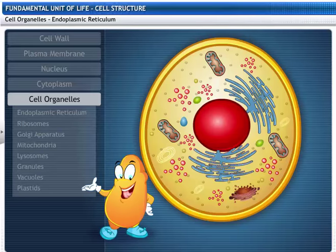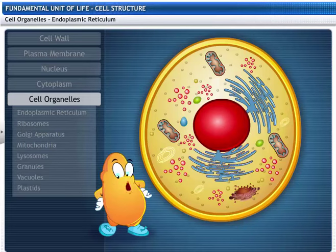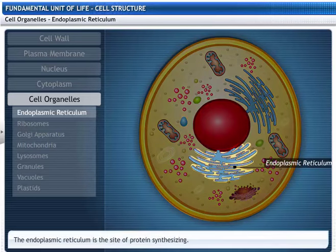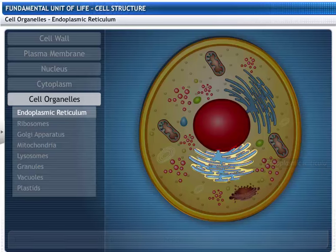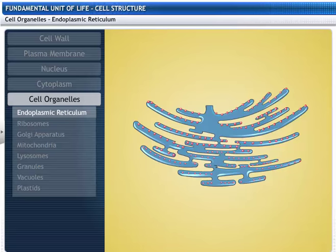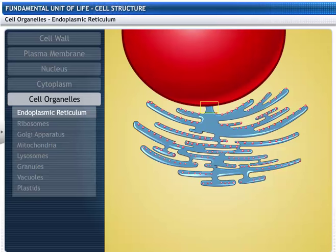Did you know that the cell has different organelles? We will explore them now. This is the protein synthesizing site of the cell called the endoplasmic reticulum. It is an irregular network of double tubular membrane, continuous with the nuclear membrane on the inside.